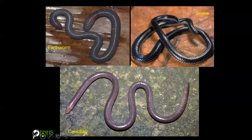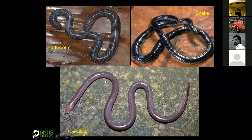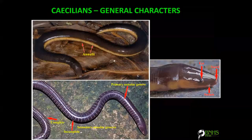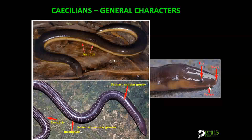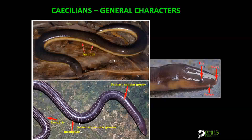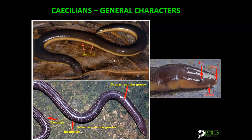This slide shows the difference between a caecilian, an earthworm, and a snake. You won't find a head or eye structure in earthworms, but you will easily find them in caecilians and snakes. General characters of caecilians include a distinct eye, tentacles, mouthparts, and nostril, as well as the annuli — both complete and incomplete — which are taken into consideration while identifying these animals.